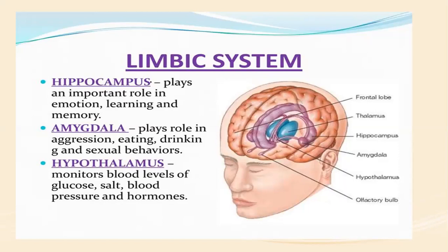The hippocampus plays an important role in emotion and long-term memory — certain sound frequencies can cause hippocampal resonance that triggers old or past memories. The amygdala, which looks like an almond, plays an important role in aggression, eating, drinking, and sexual behavior.